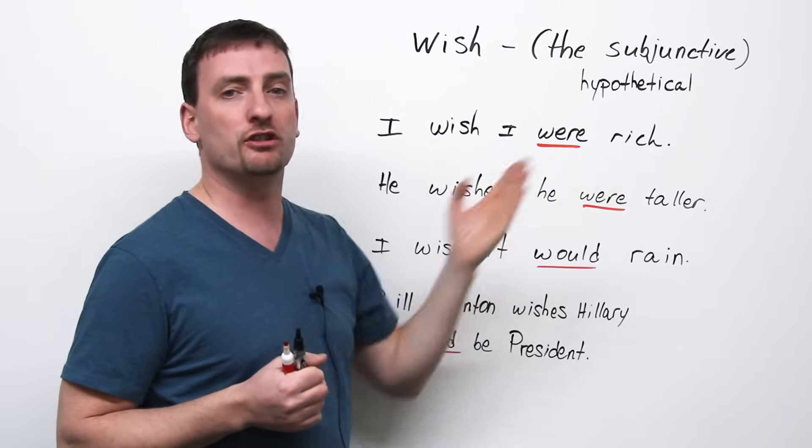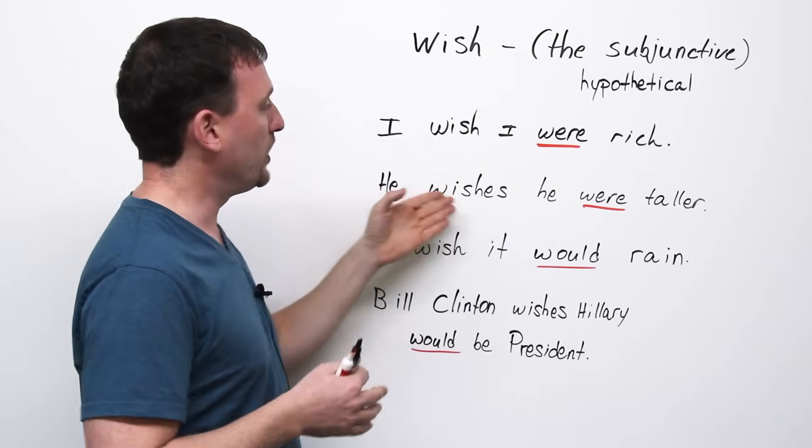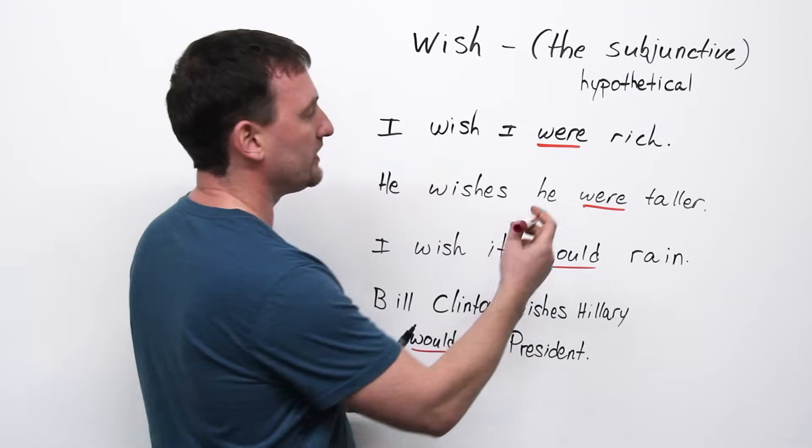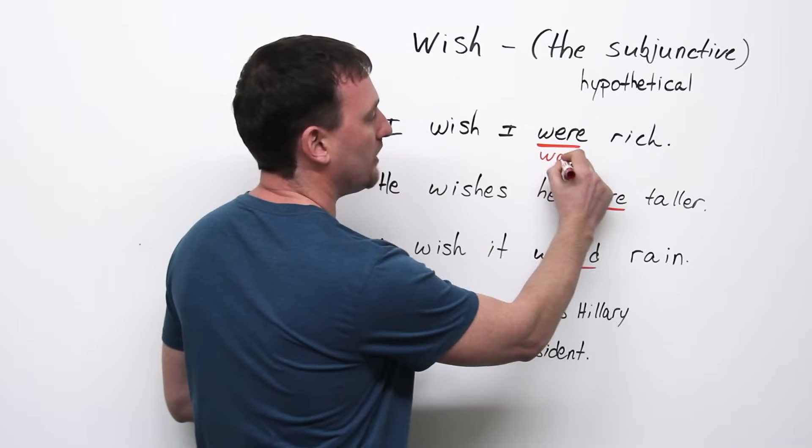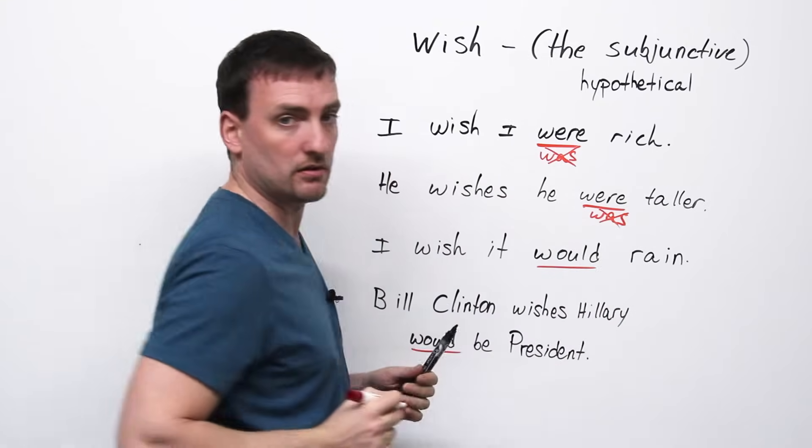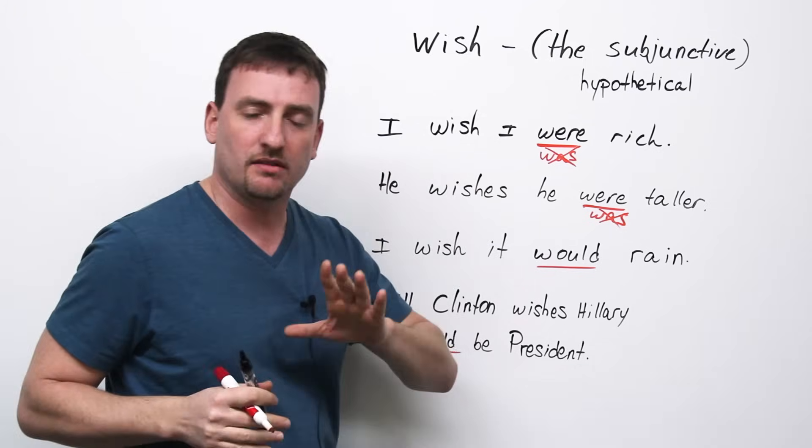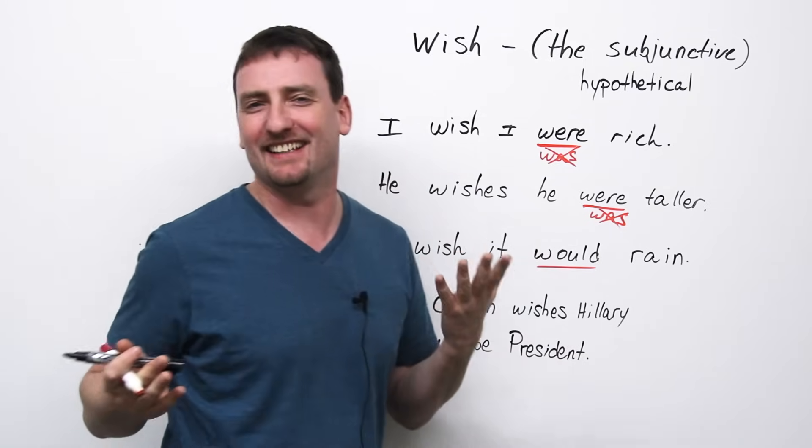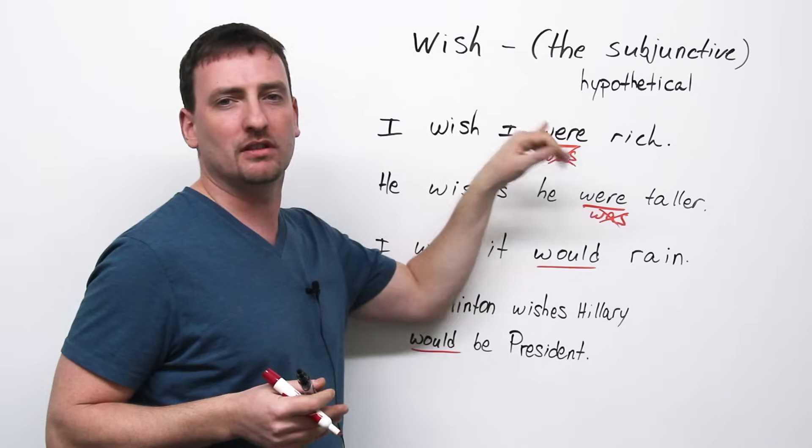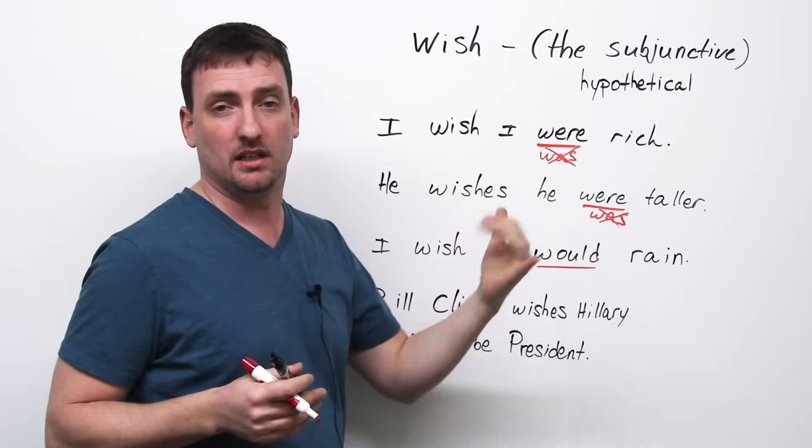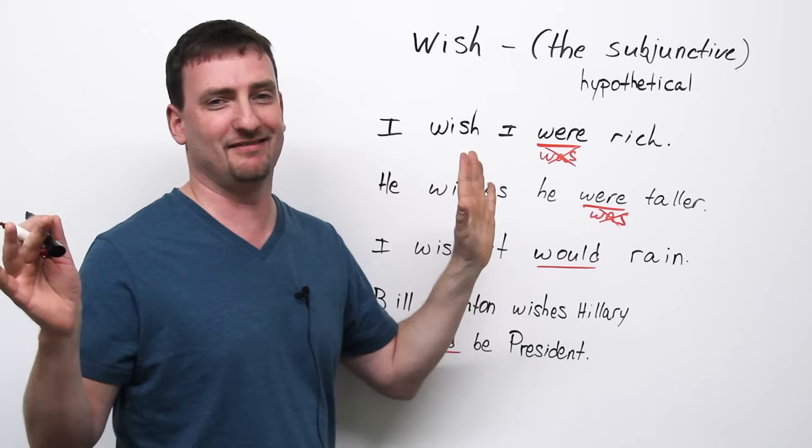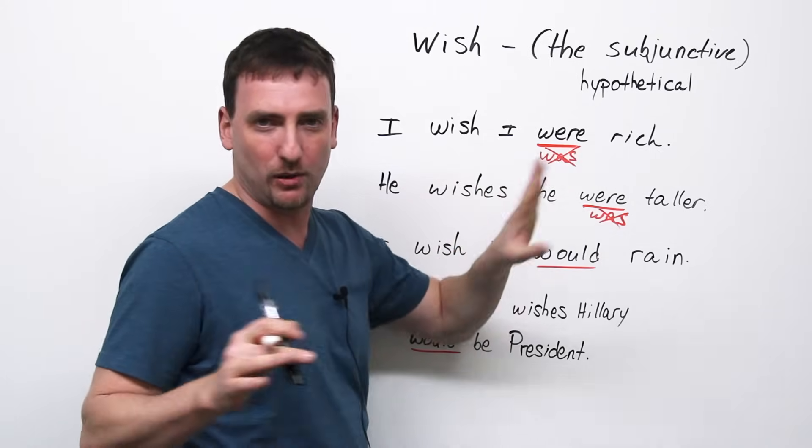I wish I were rich. He wishes he were taller. So, first thing you notice, I'm using were, not was. Now, why? Because. I'm sorry to say it like that, but that's how it is. Always use were, never use was. I, you, he, she, it, they, we, were. Sorry, I almost said was. Were. Always.